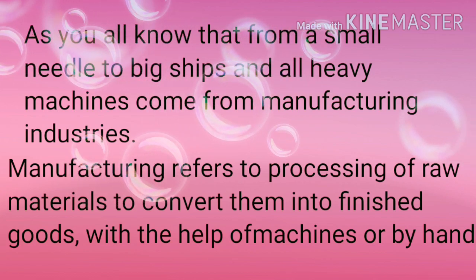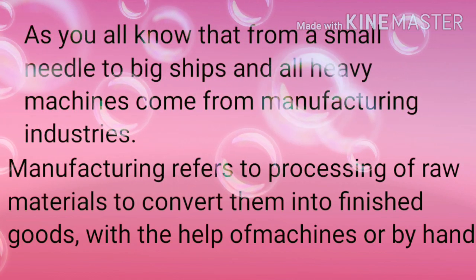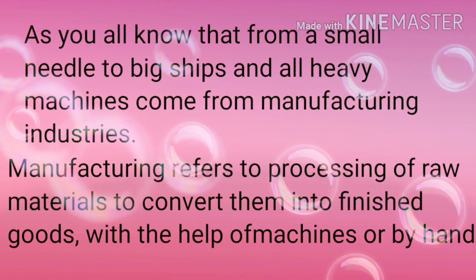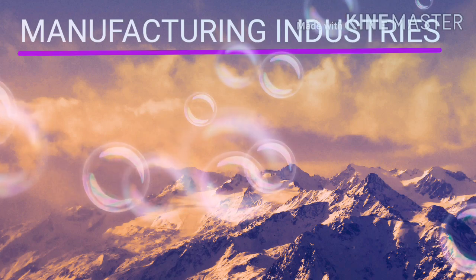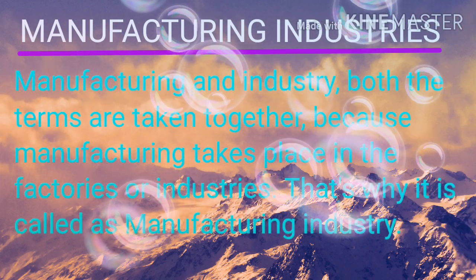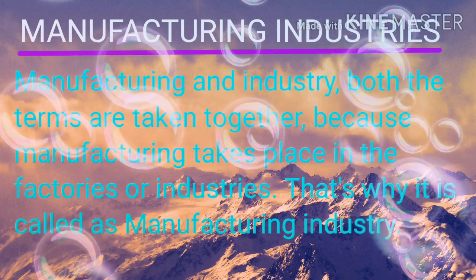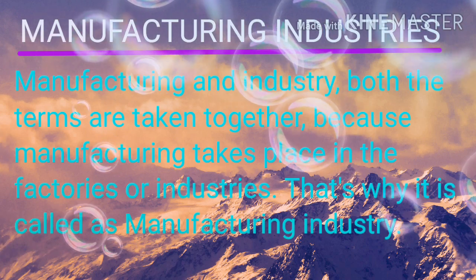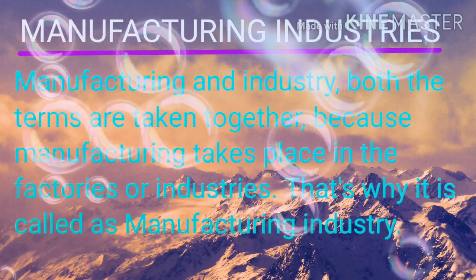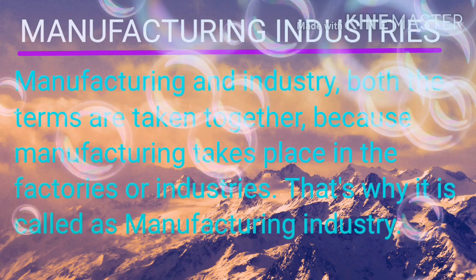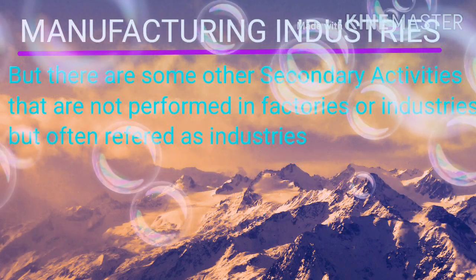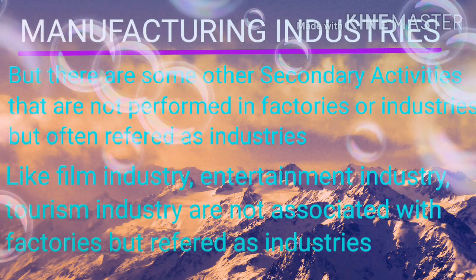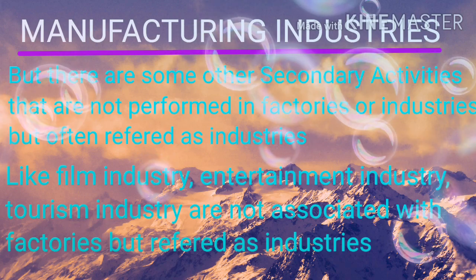Manufacturing refers to processing of raw materials to convert them into finished goods, with the help of machines or by hand. The terms manufacturing and industry are taken together because manufacturing takes place in factories or industries. However, there are some other secondary activities not performed in factories but still referred to as industries.